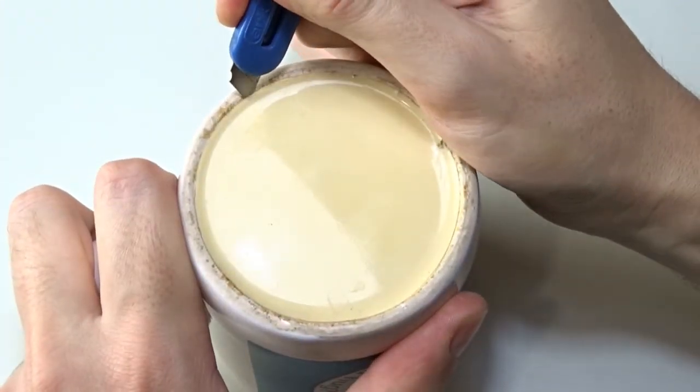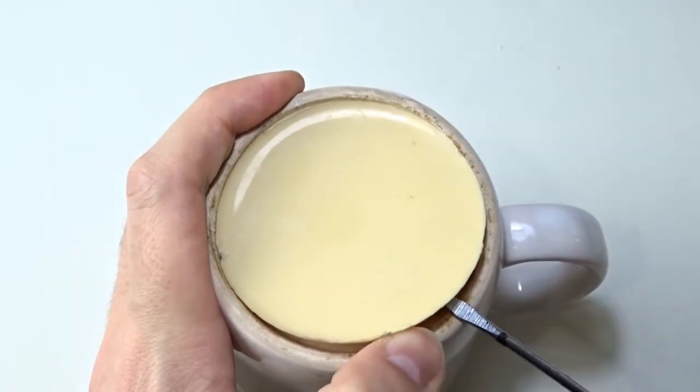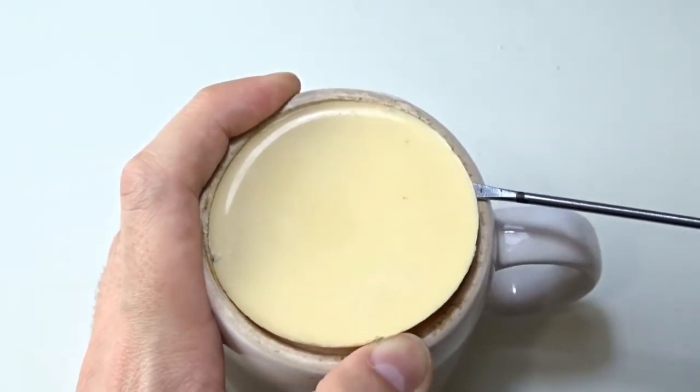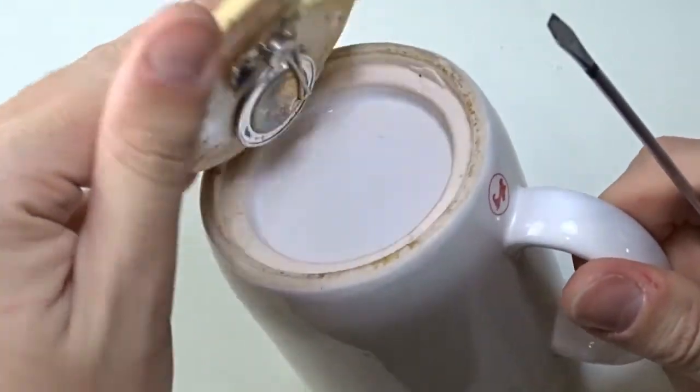Use an office knife to cut the sealant on the bottom, then pry open the bottom part with a small screwdriver. Here you can see what is inside.